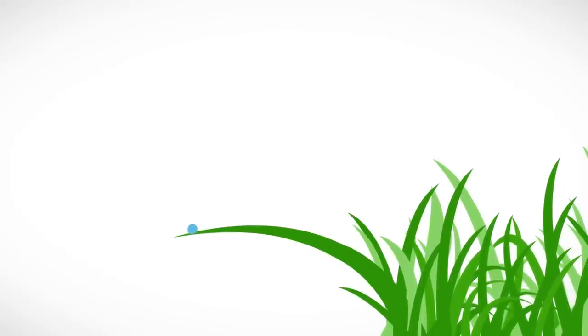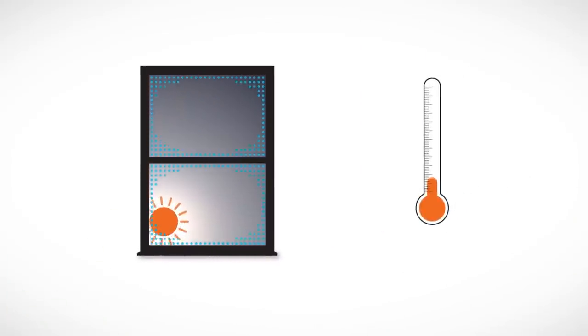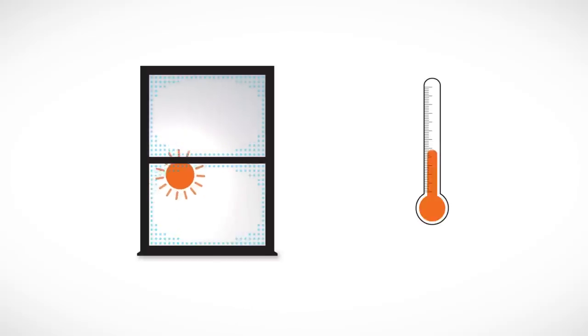Condensation on the outside of a window is the same as dew on your lawn. It occurs mostly during the spring and fall when there are cooler nights and warmer days, and is usually a good indicator of energy efficient windows.